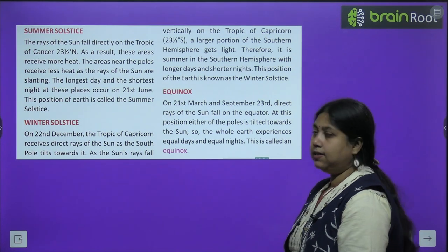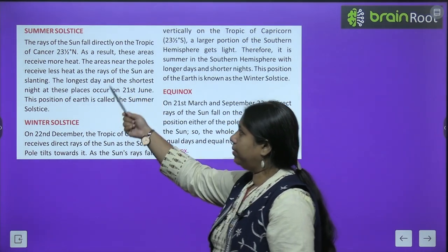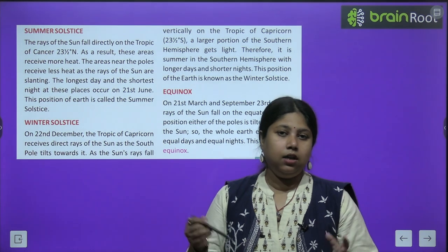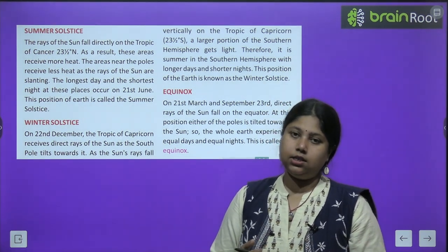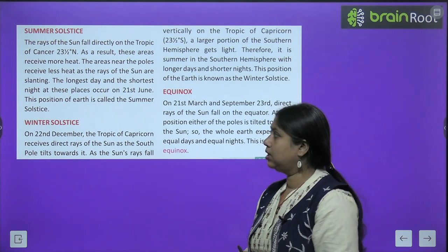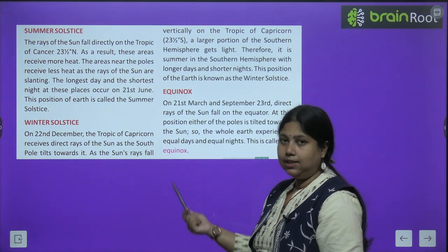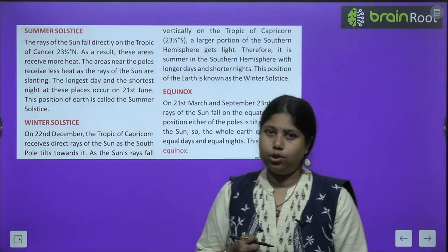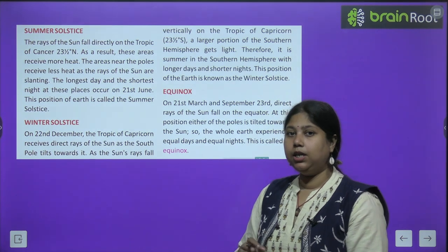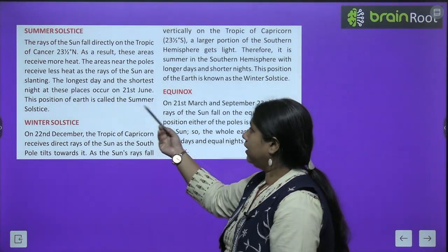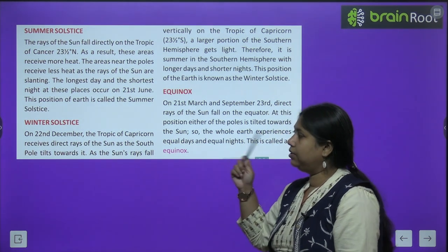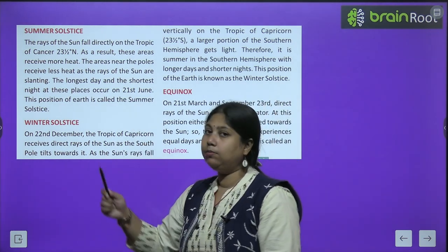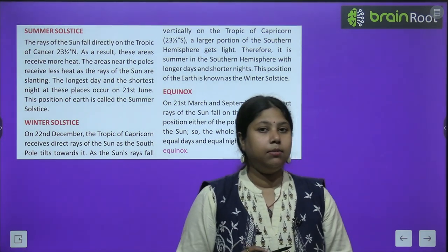Summer solstice aur winter solstice ke baare mein padhenge. The rays of sun fall directly on the Tropic of Cancer at 23.5 degrees north — as a result these areas receive more heat. Poles ki taraf slanting rays jaati hain, isliye poles par kam roshni pahunch paati hai aur wahan itni zyada garmi nahin hoti, rather wahan thandi hoti hai mostly. The longest day and the shortest nights occur on 21st June — isliye isko hum summer solstice bolte hain.